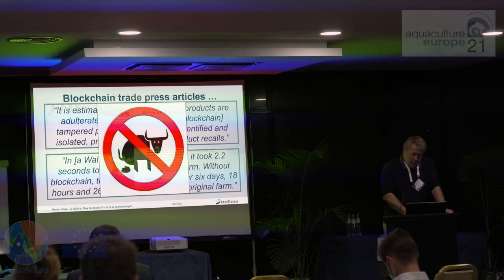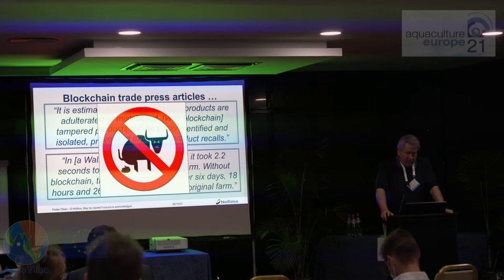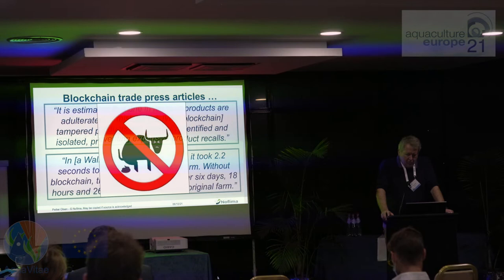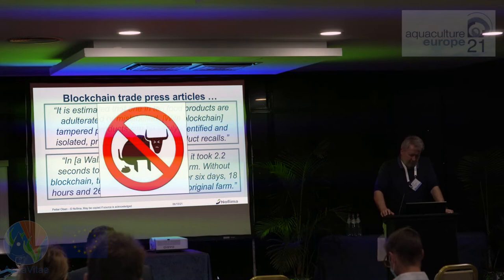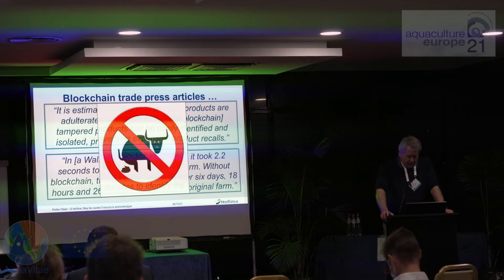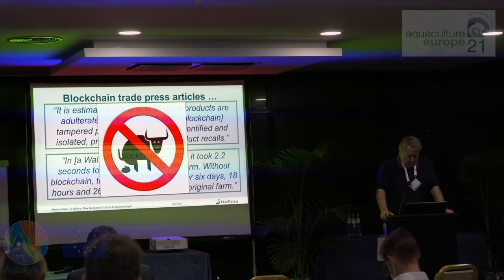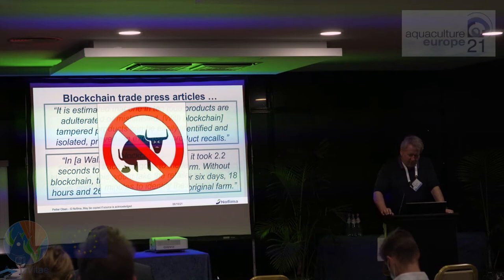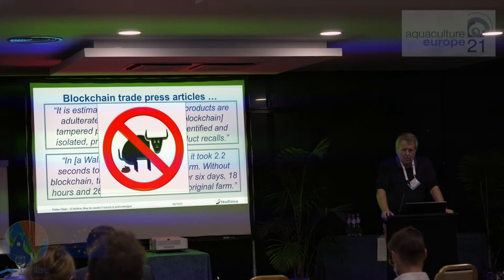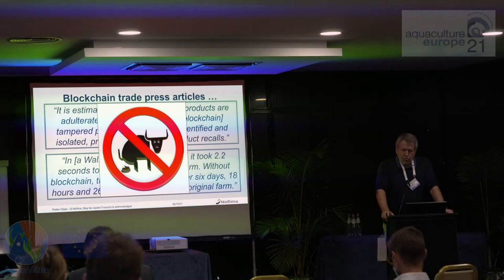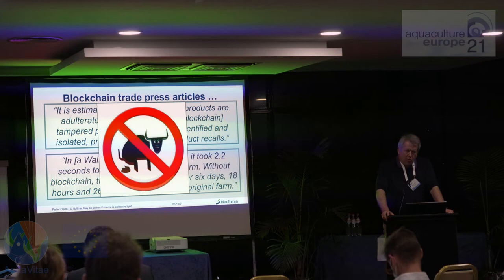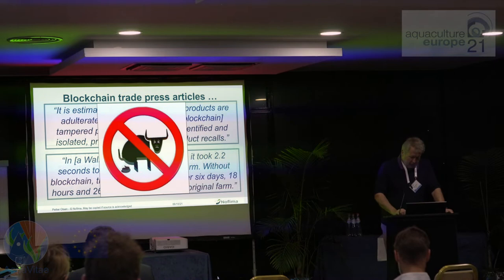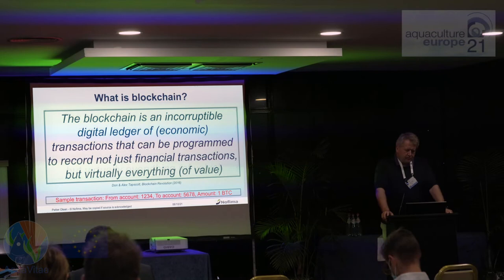A challenge with blockchain, especially in the last few years, is trade articles like this — these are direct quotes. 'It's estimated that one in ten food products are adulterated or mislabeled; with blockchain you could easily identify tampered products.' Walmart had a trial of blockchain and a report said it took 2.2 seconds to trace using blockchain, whereas otherwise it would have taken six days and 18 hours. You should get suspicious of this, and rightly so — this is total nonsense. Stories like this are undermining the relevance of blockchain because they simply are not true. For instance, blockchain is actually slower than existing systems; what they're comparing is the electronic system to a manual system.